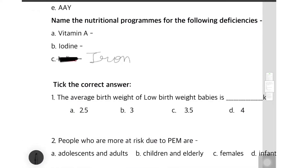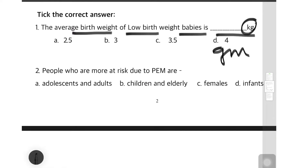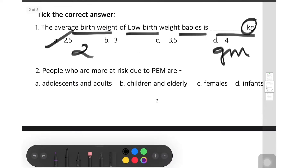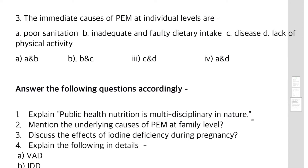The average birth weight of low birth weight babies is 2.5 kg or 2500 grams. Next MCQ: people who are at more risk due to Protein Energy Malnutrition are: a) adolescents and adults, b) children and elderly, c) females, d) infants. Children are at greater risk for PEM and elderly people too, so the answer is b) children and elderly.